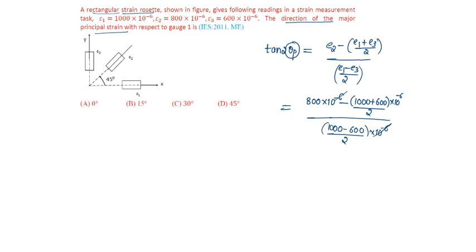10 power minus 6 gets cancelled, which will be equal to 0. So, theta p will be equal to 0 degrees.